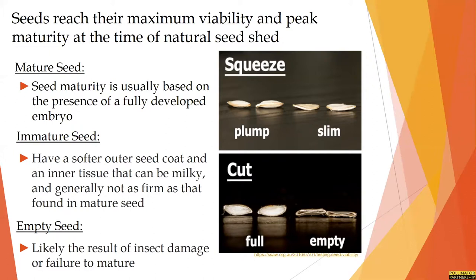A mature seed will usually be based on the presence of a fully developed embryo. The outer seed coat will change color, often darkening, and in many cases the seed will be more plump. Even with a flat seed, you can usually see where there is a fully developed embryo versus one that hasn't developed. An immature seed will often be a lighter, maybe greener or yellower in color, have a softer outer seed coat, and that inner tissue can tend to be milky and not as firm as in a mature seed. An empty seed is likely the result of insect damage or failure to fully mature or become pollinated, and these can tend to be slim or empty when you cut them open.